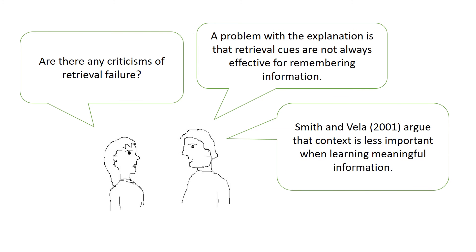So what criticisms are there of retrieval failure? A problem with the explanation is that retrieval cues are not always effective for remembering information. Smith and Vela (2001) argued that context is less important when learning meaningful information, as the meaning becomes more important than the context.